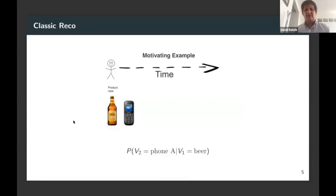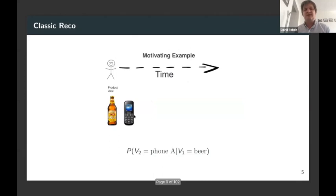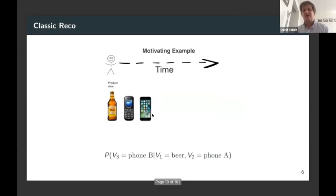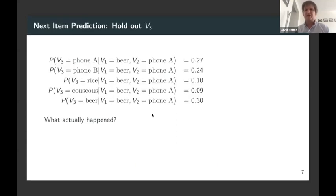The user is going to view another item and yet another item, and many classical recommender system datasets look like this. If we're building a probabilistic model, we can assume we only know part of the session — the person viewed a beer and a phone — and we hold out a third item to build a model and predict whether it's reliably predictable. That's really a lot of how we do evaluation and training on classical datasets like MovieLens.